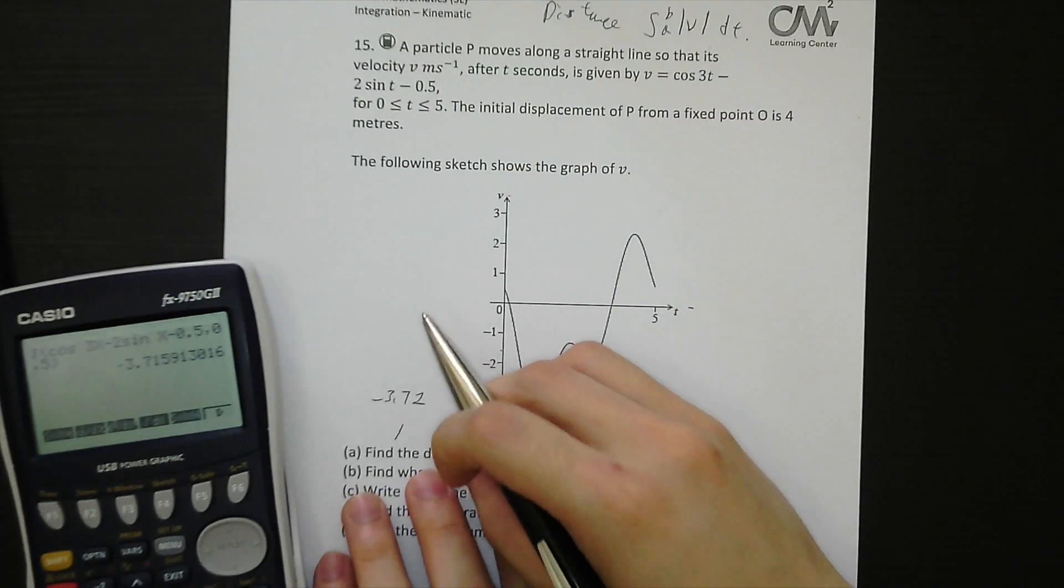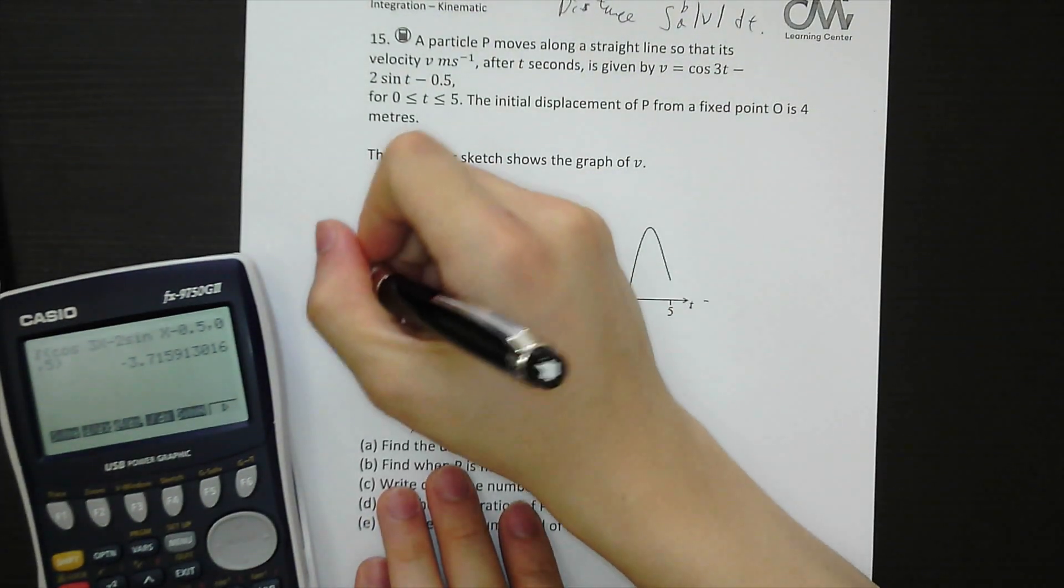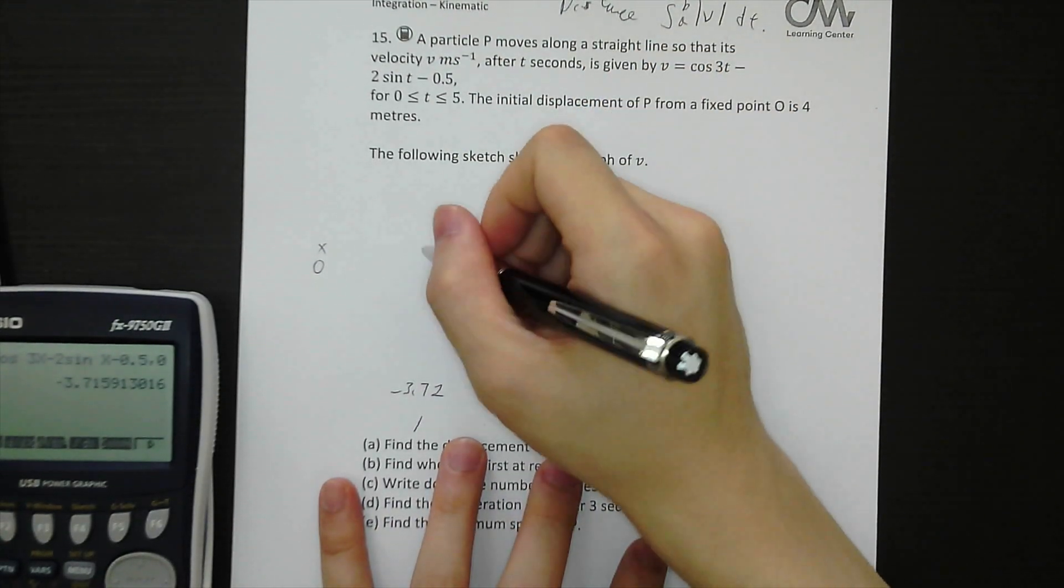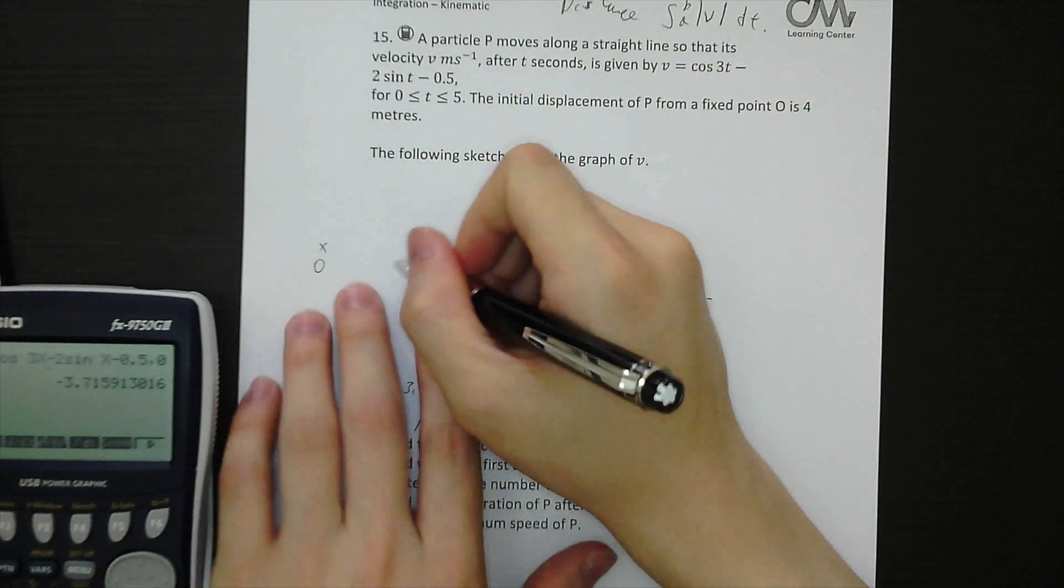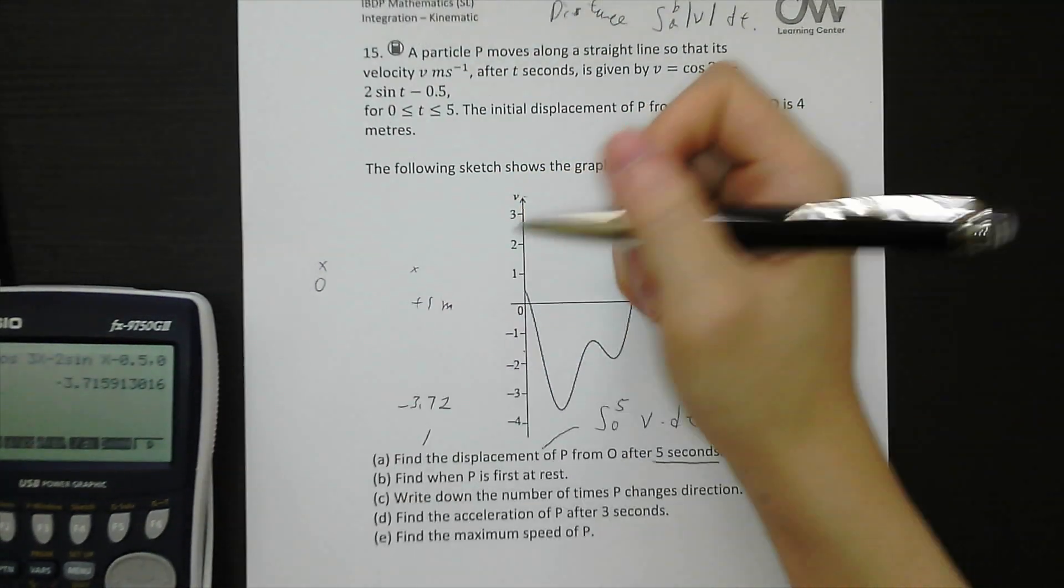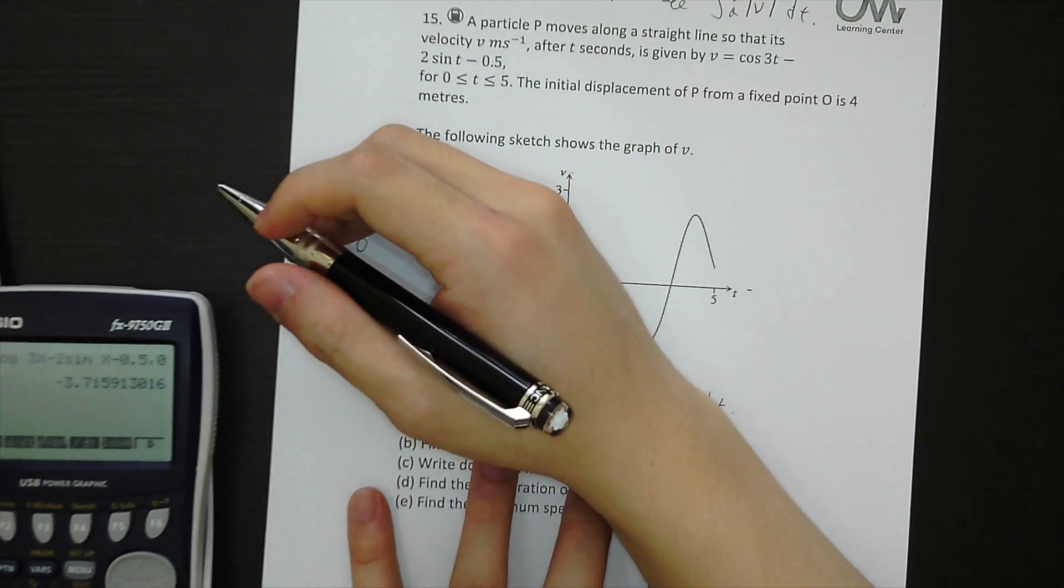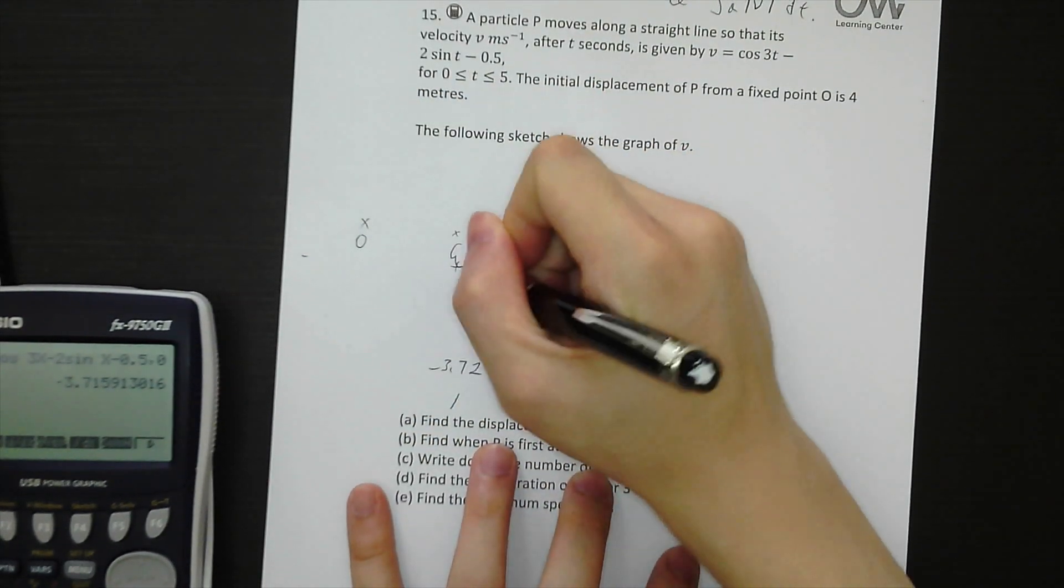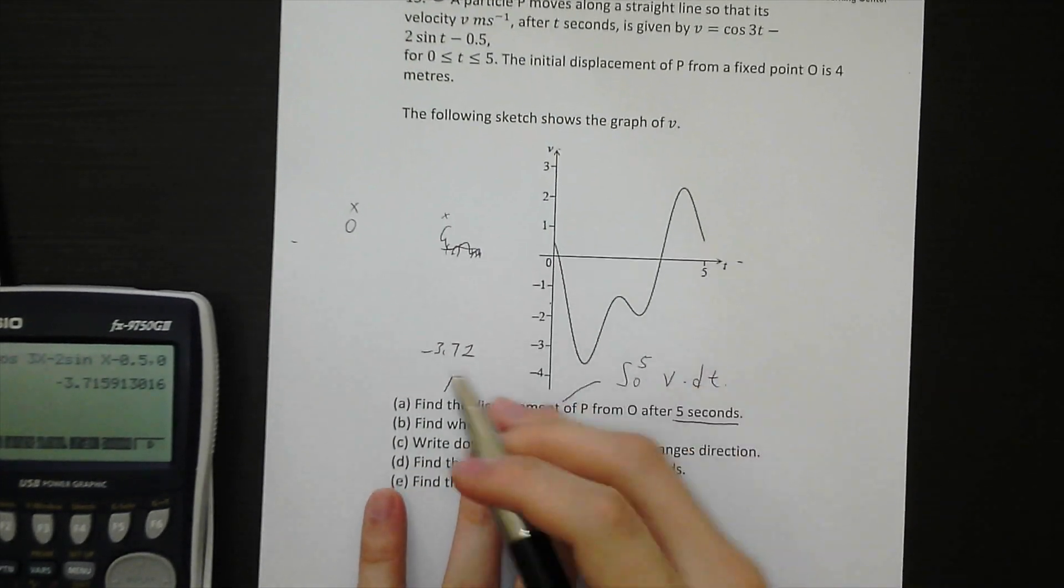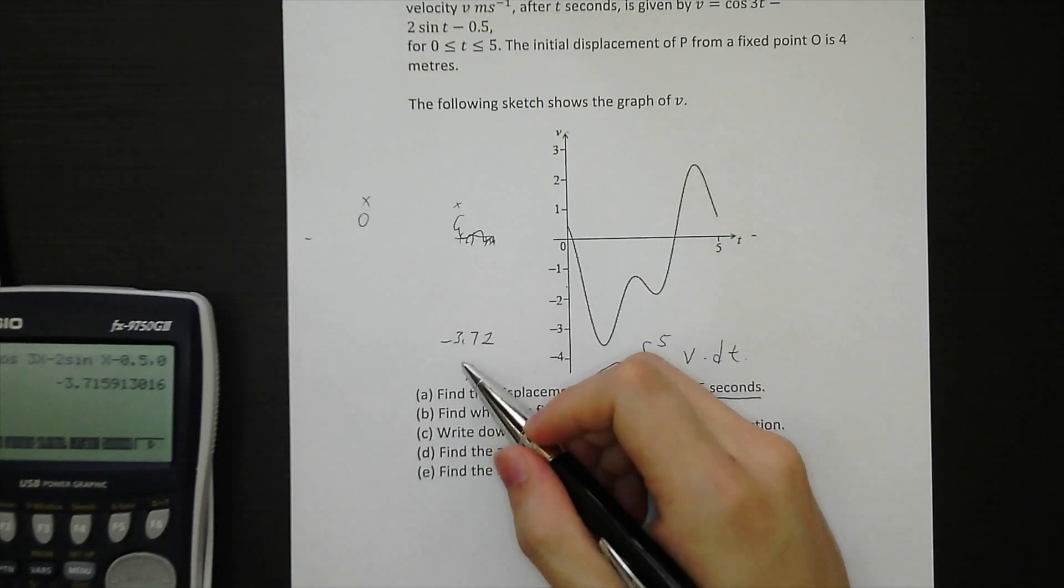And the answer is negative 3.72. So why is the displacement negative? Because the starting point is at point O here. If the end point is on the right-hand side of O, let's say 1 meter away from O, then that would be positive 1 meter. And if negative, that means it's left-hand side of the starting point. Now after 5 seconds, the displacement of point P will be left-hand side of the point O, and the distance is 3.72 meters.